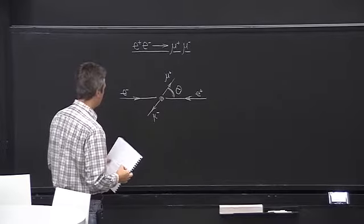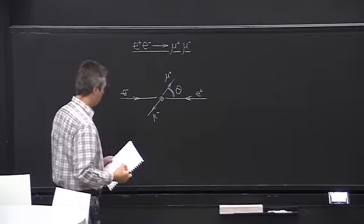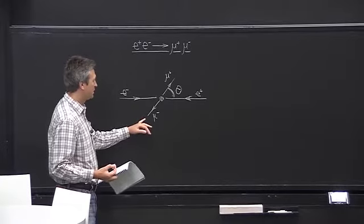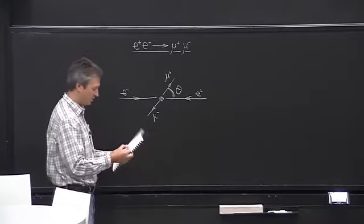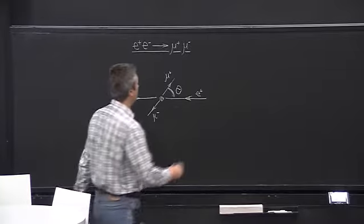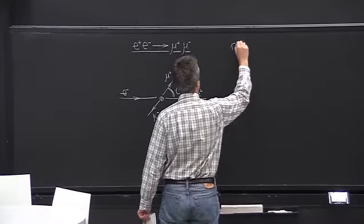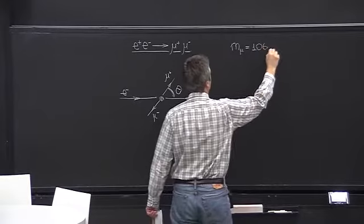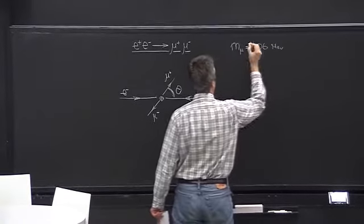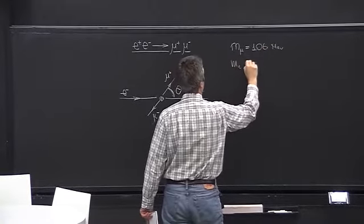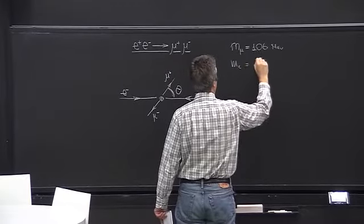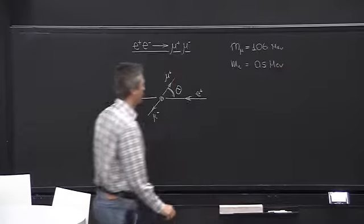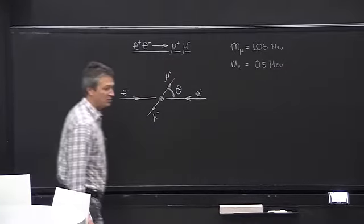Muons are twin brothers of electrons — the only difference is their mass. They're heavier. The mass of the muon is 106 MeV. The mass of the electron is 0.5 MeV. So they are quite a bit heavier than electrons.